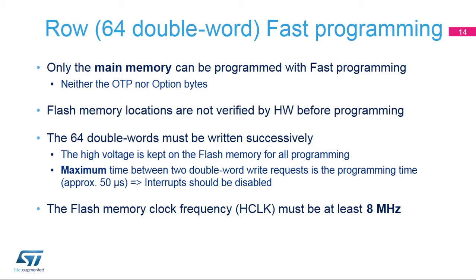Comparing fast programming versus standard programming: 512 consecutive bytes are programmed instead of 8-byte double words located anywhere in main flash memory. 8-byte programming is more reliable due to the verification step. Note that the maximum time between two consecutive double words is around 50 microseconds. If a second double word arrives after this delay, fast programming is aborted and an error flag is set. Consequently, interrupts should be disabled to ensure this delay is not exceeded.